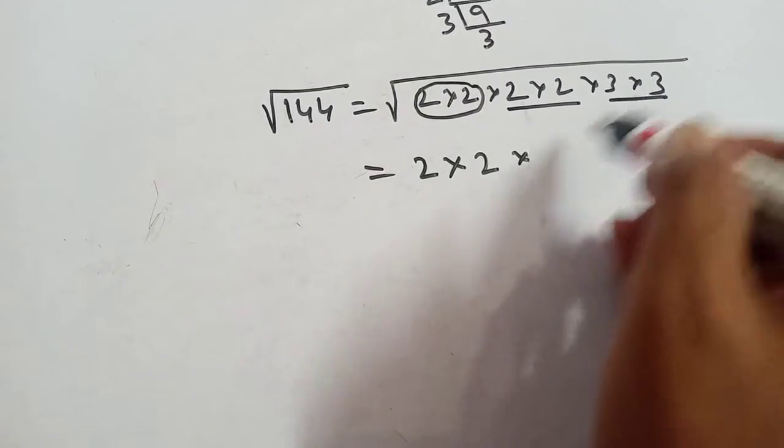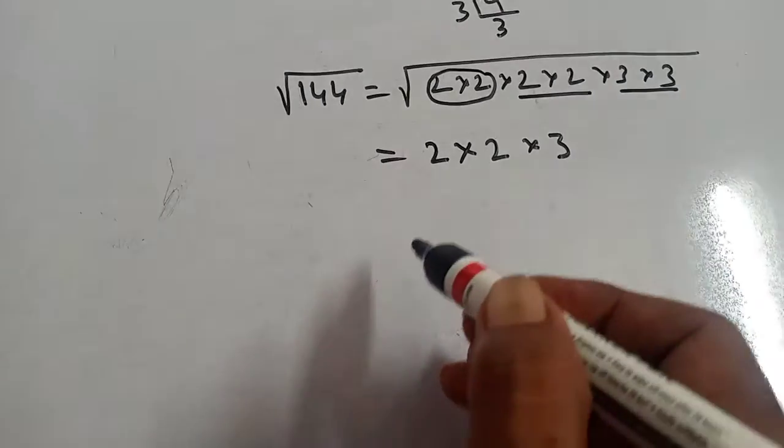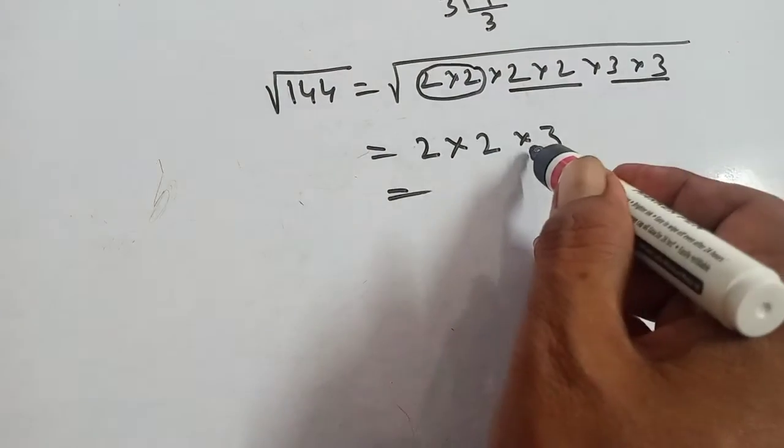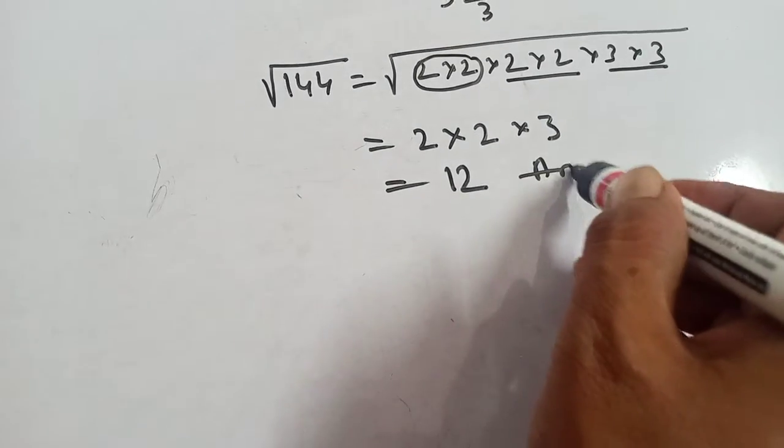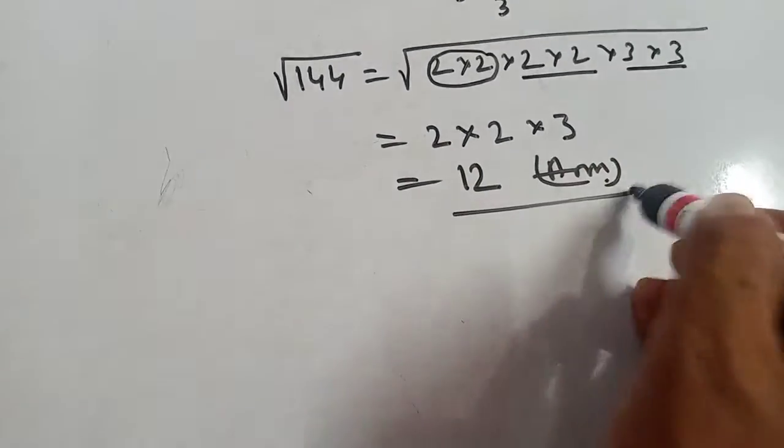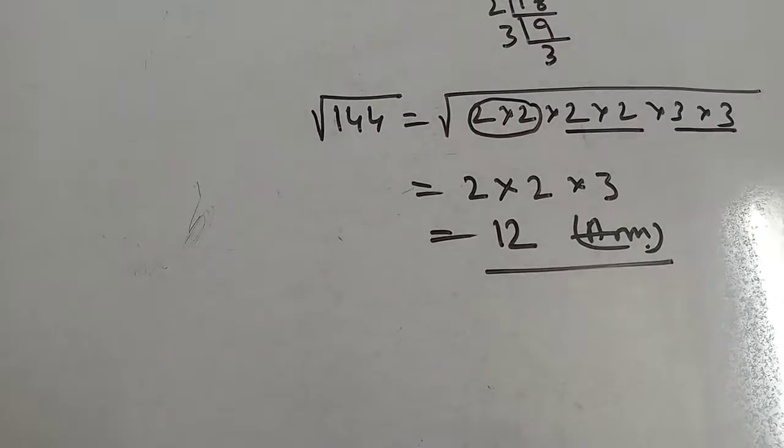Here is 2 and here is 3. Now 2×2×3 equals 12. 12 is the square root of 144.